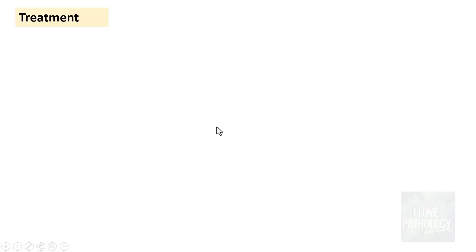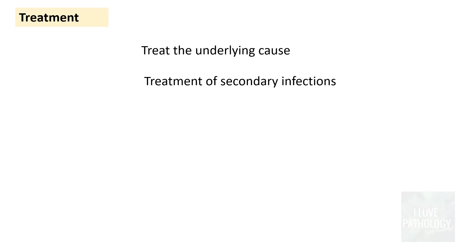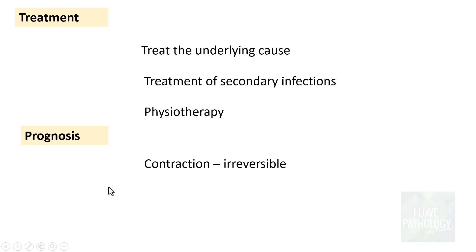Treatment of atelectasis involves addressing the underlying cause: relieve obstruction if present, treat infection if present. Contraction atelectasis, being irreversible, cannot be corrected in the same way. Secondary infections in the atelectatic lung should also be treated. Supportive care includes lung physiotherapy. Prognostically, contraction atelectasis has a worse prognosis compared to the other reversible types.